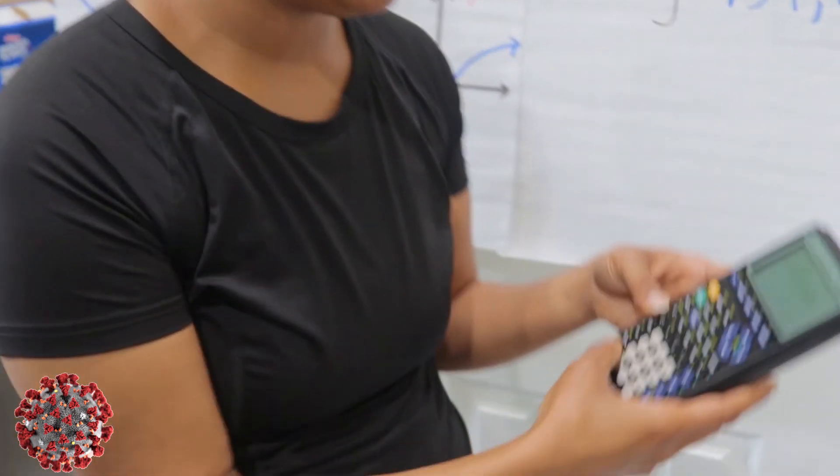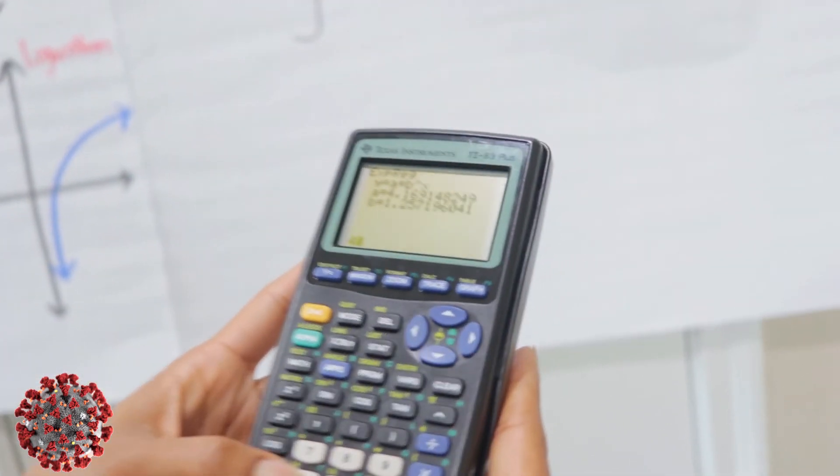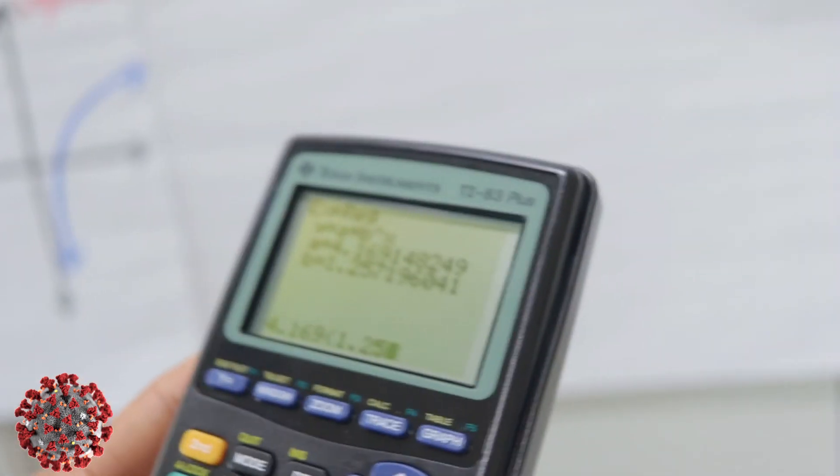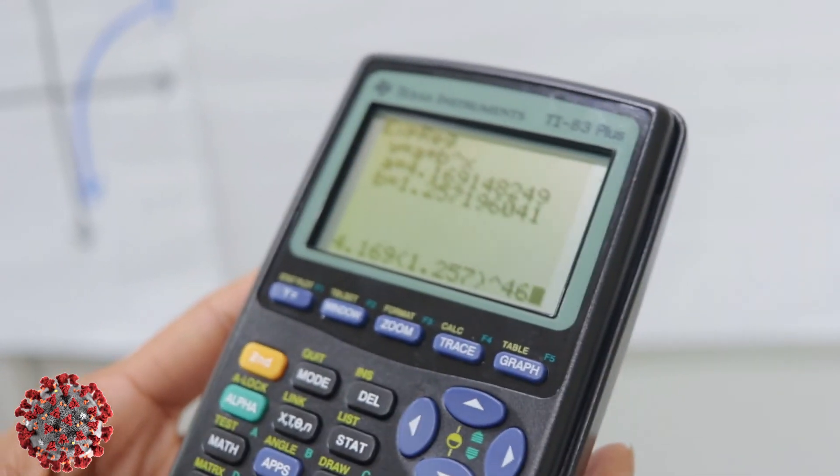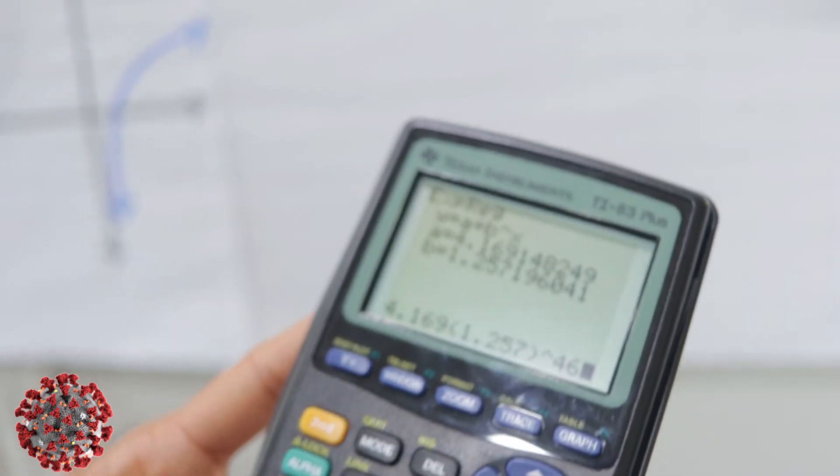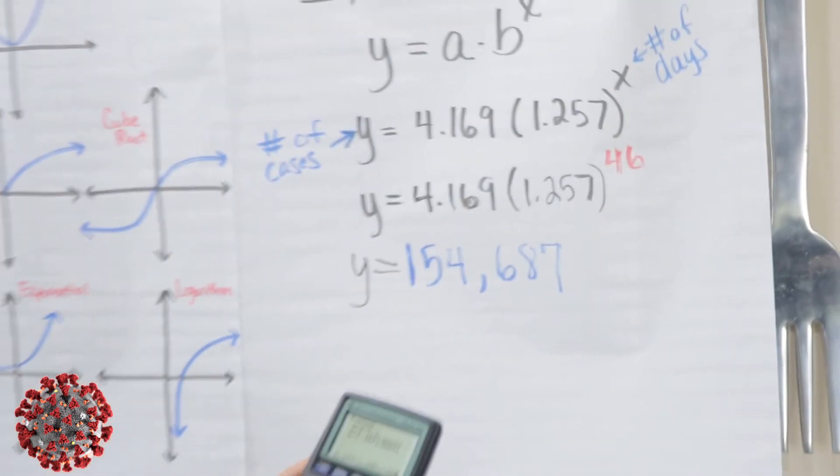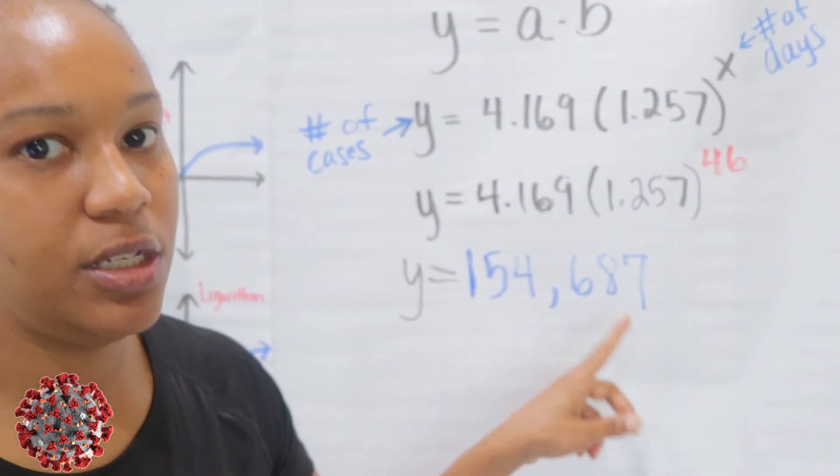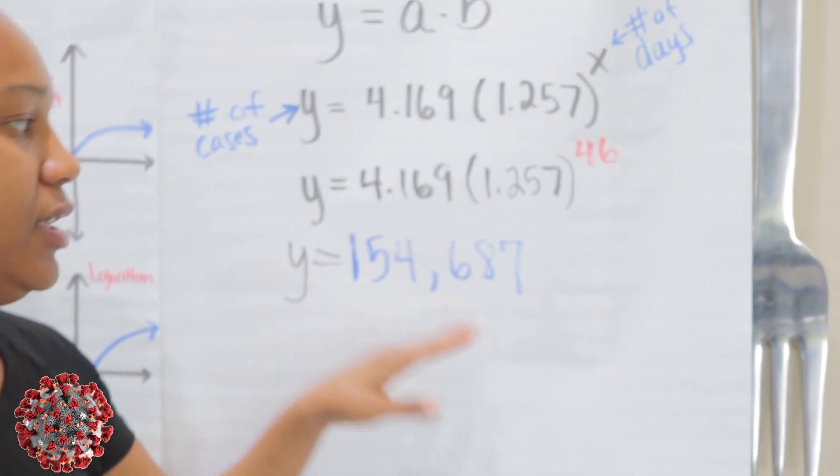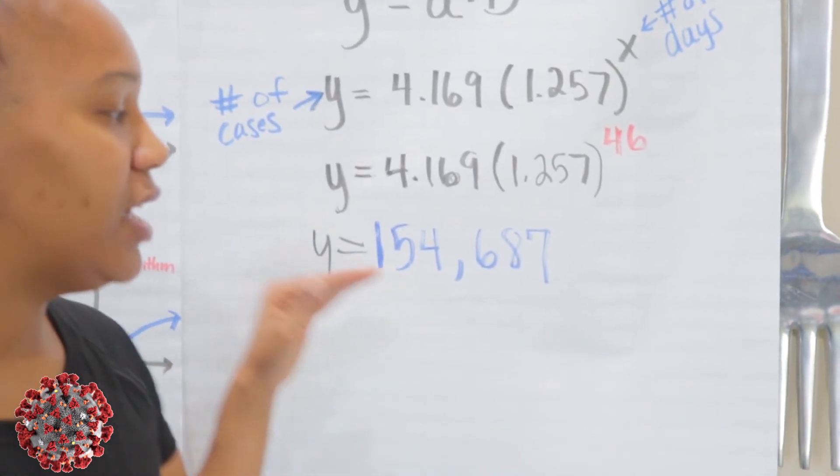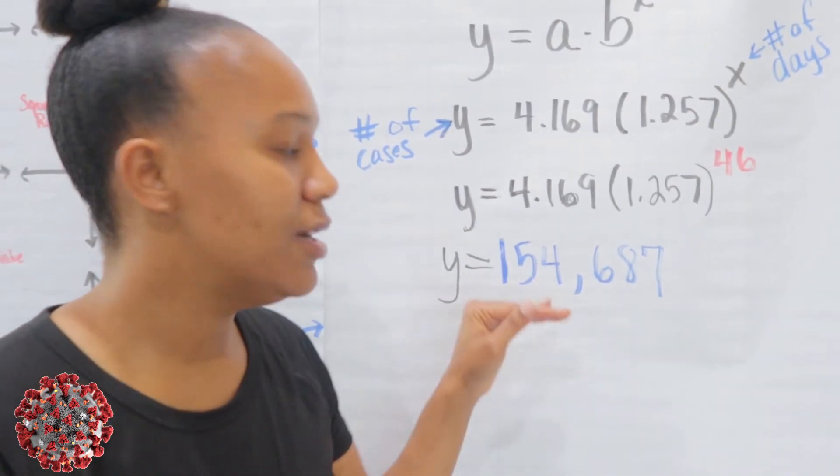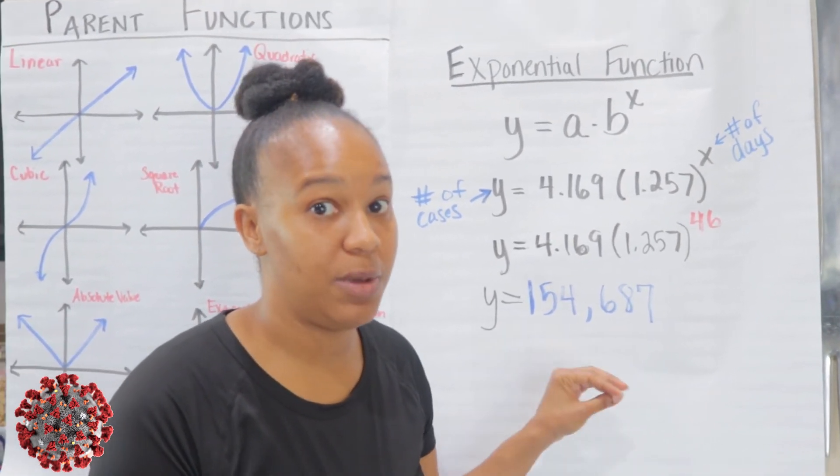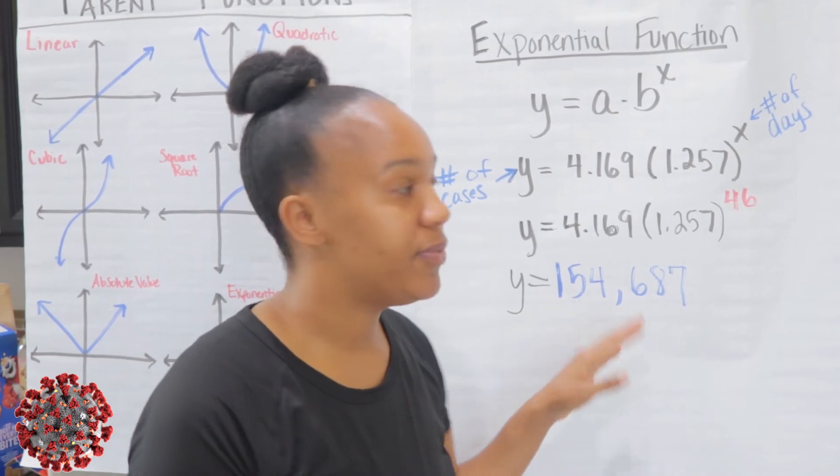And again, I'm just going to show you quickly how to plug that in the calculator: 4.169 times 1.257 raised to the 46 power. And then you hit ENTER, and this is the number you get: 154,687 cases. So by the end of the month, we can expect to have 154,687 cases of coronavirus, people that test positive for coronavirus in the US.